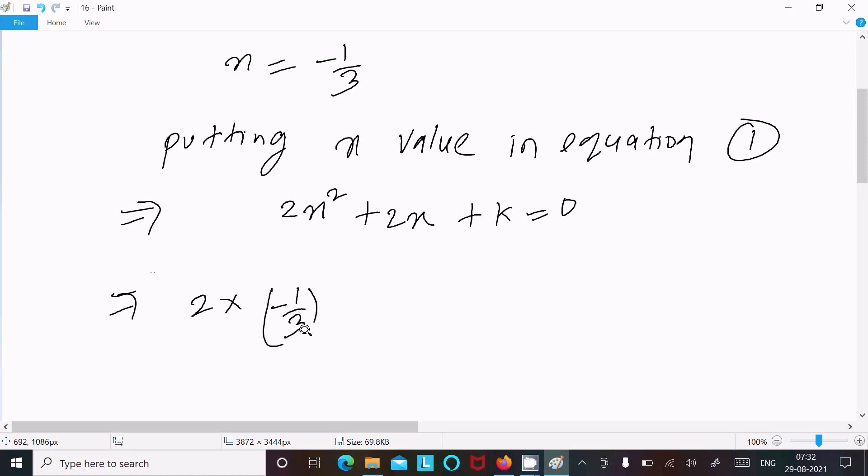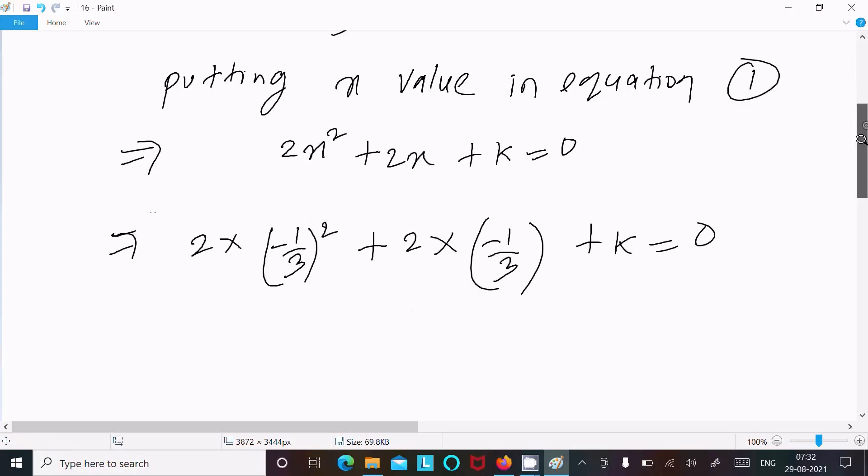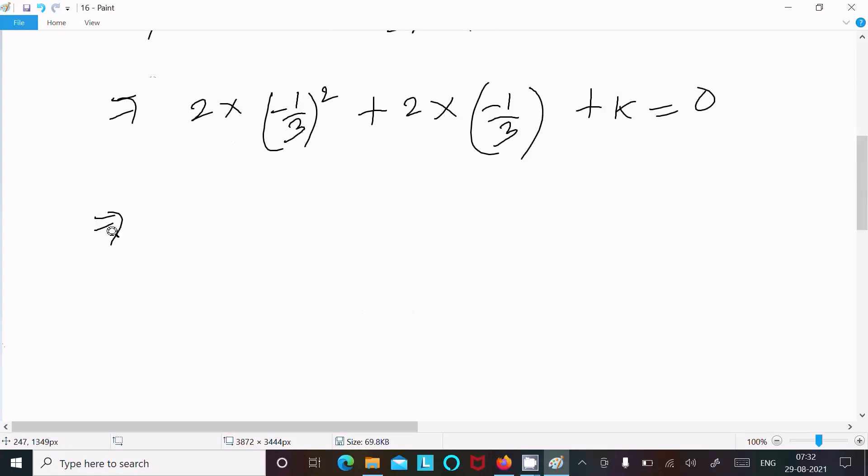So 2 times (-1/3)², that is 1/9, plus -2/3 plus k = 0. This here: 2/9 - 2/3 + k = 0.